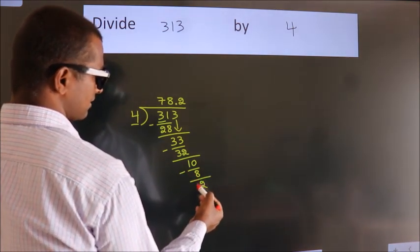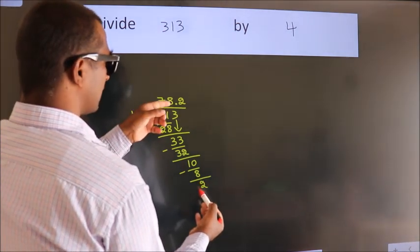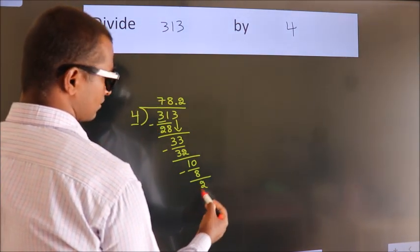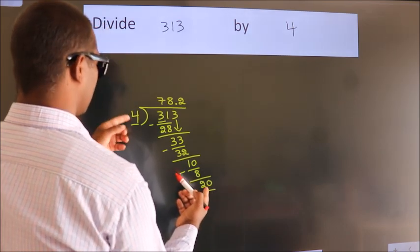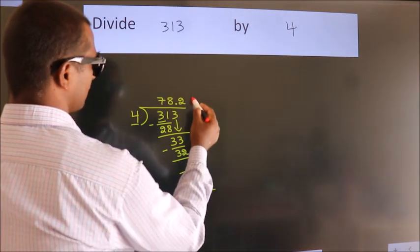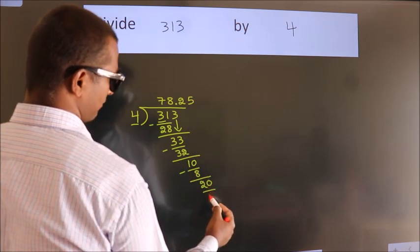After this, we already have the decimal. So directly take 0. So, 20. When do we get 20? In 4 table. 4 5's 20.